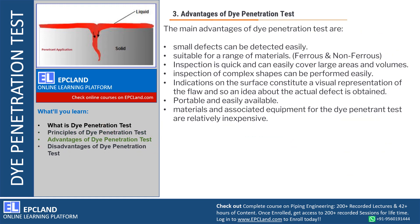Now let us look at the advantages of Dye Penetration Test. First of all, we can detect very small defects. It is suitable for a range of materials — ferrous and non-ferrous. Inspection is very quick and can easily cover large areas and volumes wherever the penetrant can be applied. Inspection of complex shapes can also be performed.